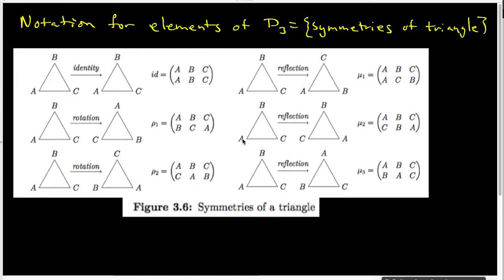In this video, I want to look at the notation our author is using to denote the elements of D3, which is the set of symmetries of an equilateral triangle. The identity permutation — what I like to call the do-nothing — nothing gets moved, and so this particular notation simply indicates that nothing got moved. A is still in A, B is still in the B position, C is still in the C position. It's the rest of the symmetries that I actually want to look at in some detail, because understanding this kind of notation is not exactly straightforward until you start thinking about what the author is doing.